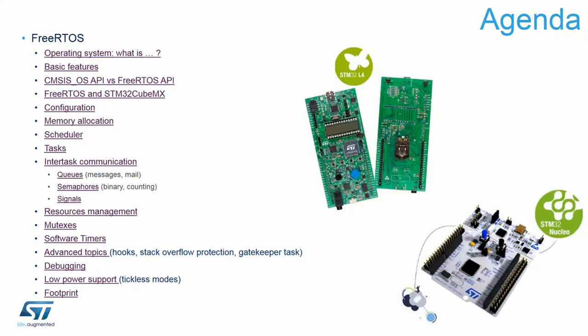We will start with a short discussion about the operating system — what it is and what its main components are. Then we will switch to the basic features of FreeRTOS. Next we will discuss the APIs used within FreeRTOS: the native FreeRTOS API, and then the CMSIS-OS API proposed by ARM, which is an additional layer on top of the FreeRTOS API.